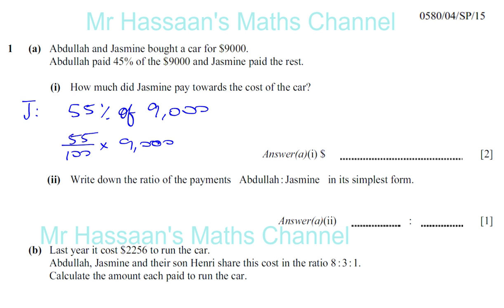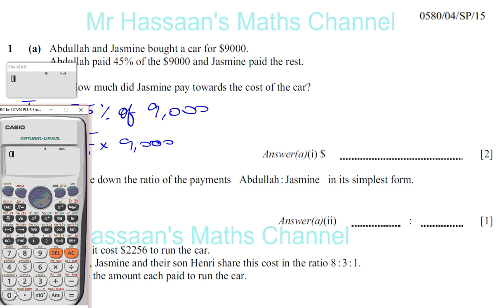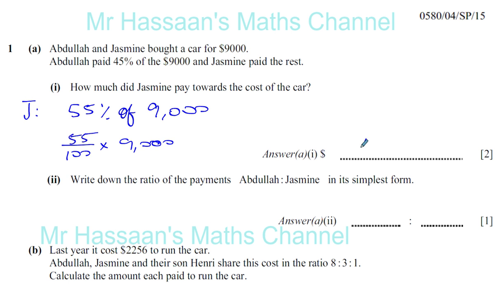In any case, you'll get the answer. So 0.55, which is 55% times $9,000, gives us $4,950. We could have found what Abdullah paid and then taken that from $9,000 to get the answer, and that would have been fine.